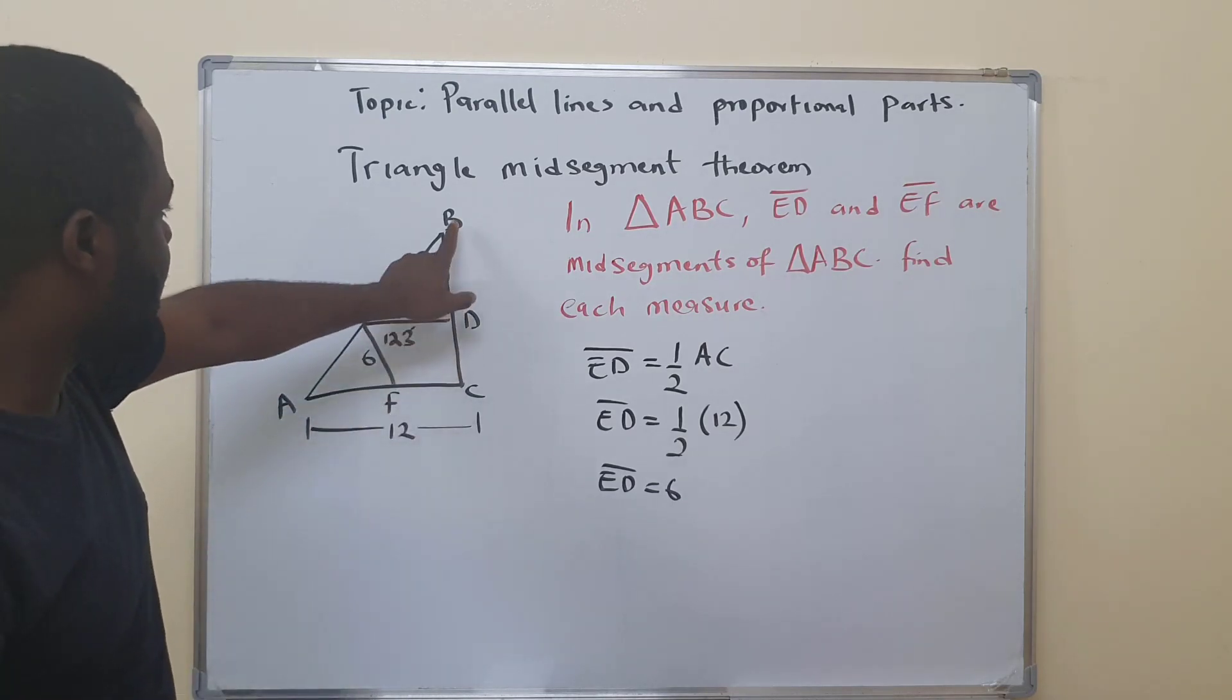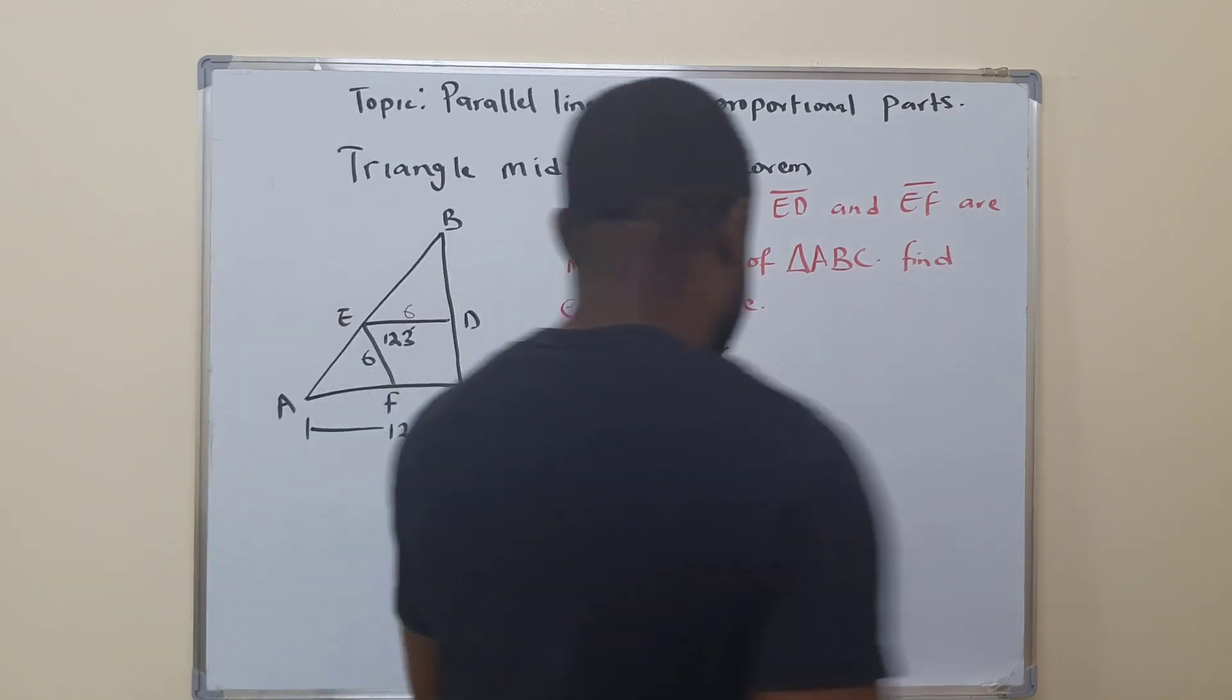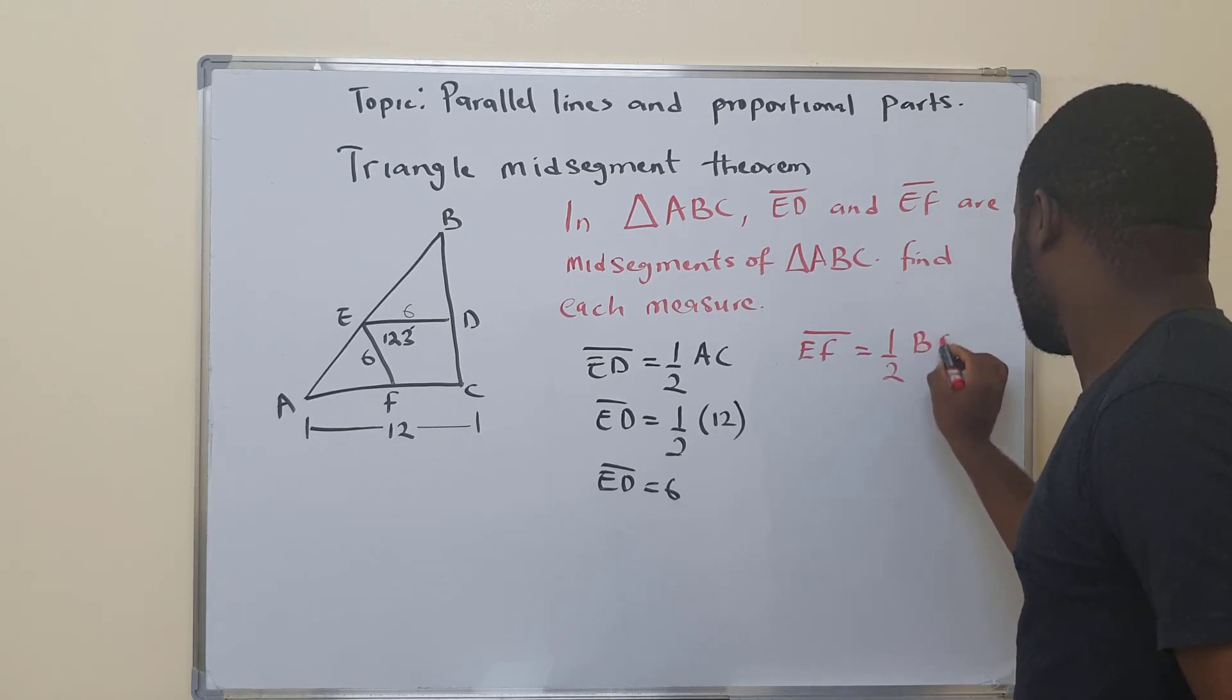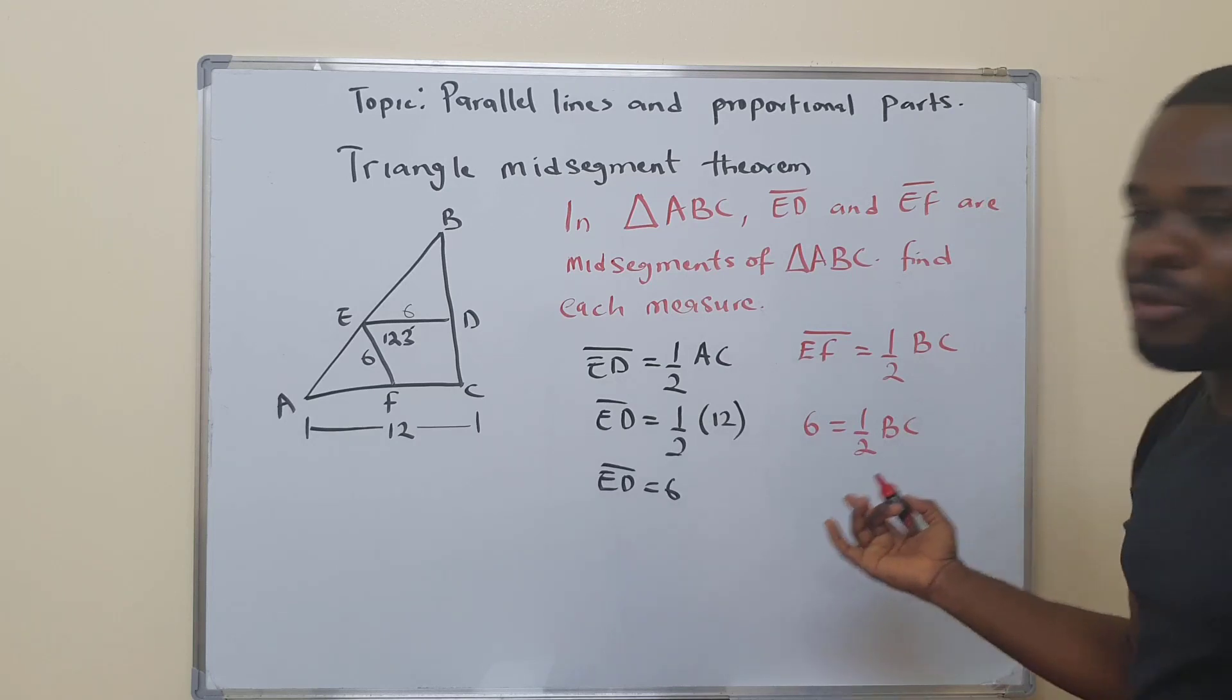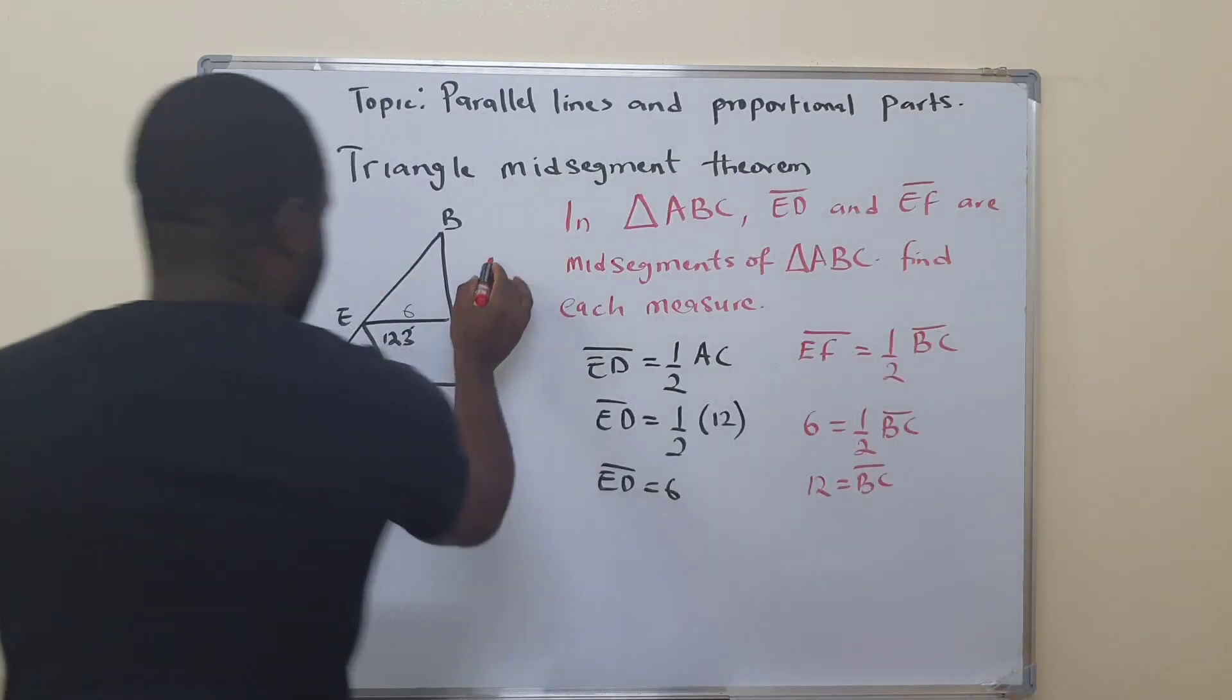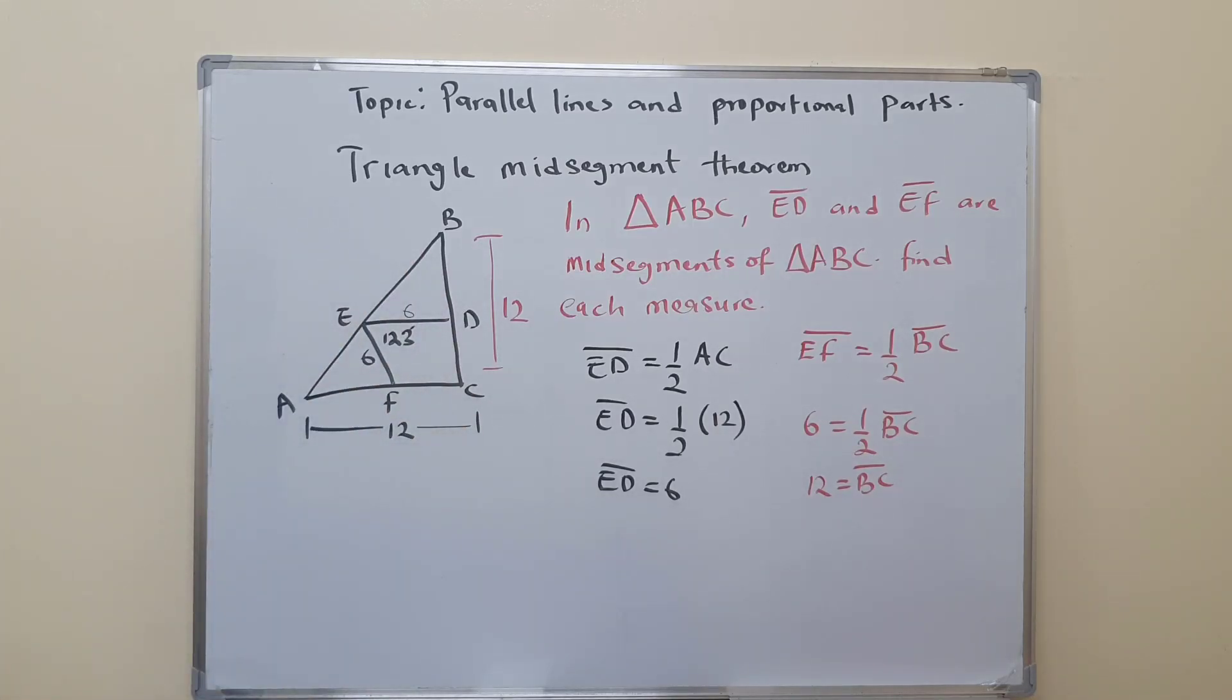We are now told that we should also find BC. So EF will be half of BC. They told us that EF is 6. So 6 equals one-half BC. You know what to do - we cross multiply, so 12 equals BC. This side is 12. You can see how we used the midsegment theorem to find the unknown sides.